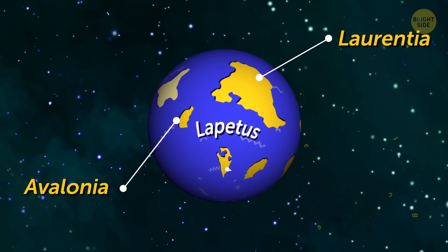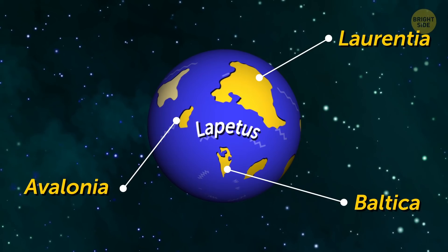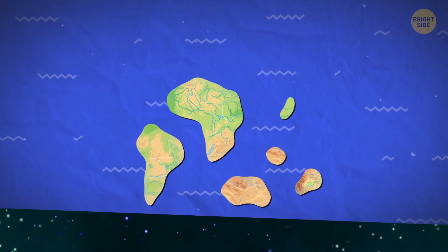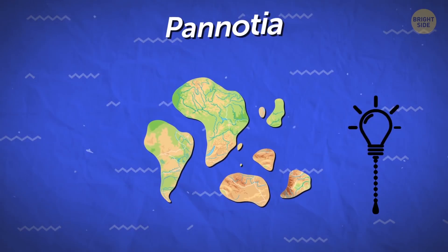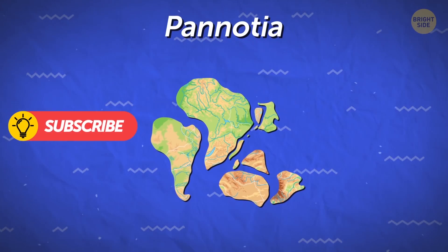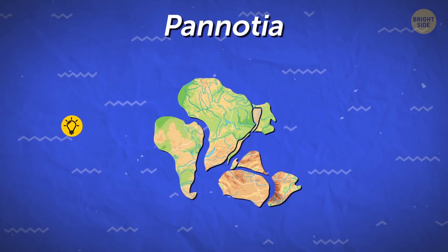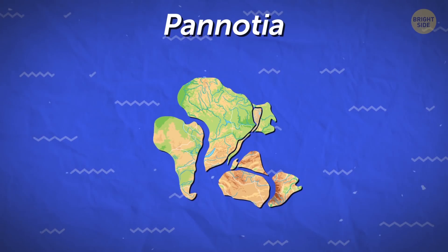There was Laurentia, Avalonia, and Baltica. But history was once again repeating itself. So the ocean vanished, and the lands merged again to form a new great supercontinent called Pannotia.